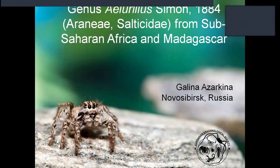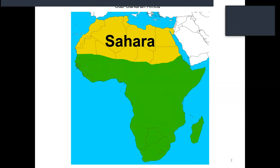My talk is about genus Allurellus from Sub-Saharan Africa and Madagascar. Sub-Saharan Africa is the part of the African continent that lies south of the Sahara Desert, and it also includes multiple archipelagos and islands such as Madagascar, Seychelles, Cabo Verde, etc. I use geographical and zoogeographical meanings instead of political ones. The south border of the Sahara Desert is also the south border of the Western Palearctic, so I actually deal with most of the Afrotropics.